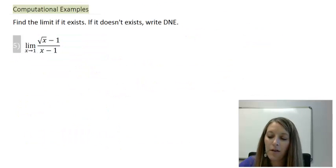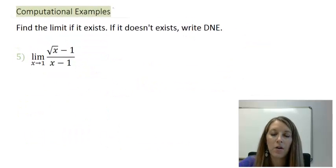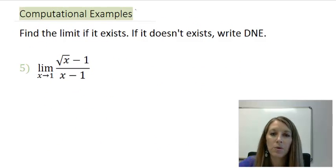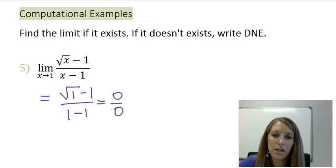I have one more example. I suggest that you pause the video and see if you can come up to the answer with this one on your own. First thing I do is I substitute in my y value, square root of 1 minus 1 over 1 minus 1. Of course, that gives me 0 over 0, which tells me I need more work.